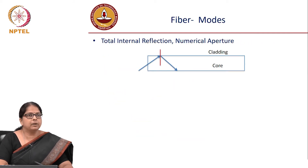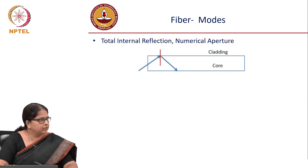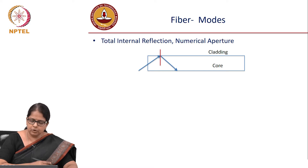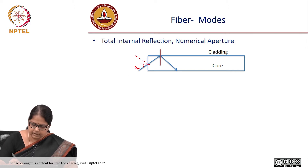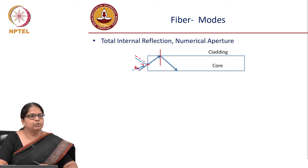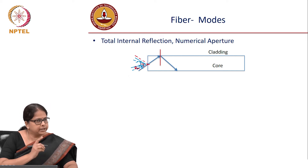Now we move on to the next topic which is modes of a fiber. First we will try to do a conceptual understanding of a mode. You remember total internal reflection, numerical aperture, acceptance angle — the angle theta A is your acceptance angle, which means any ray of light coming in within this acceptance angle is going to propagate inside the system. But is that completely true? Does it mean that my incident ray can come at any arbitrary angle within this acceptance cone and still be propagated?